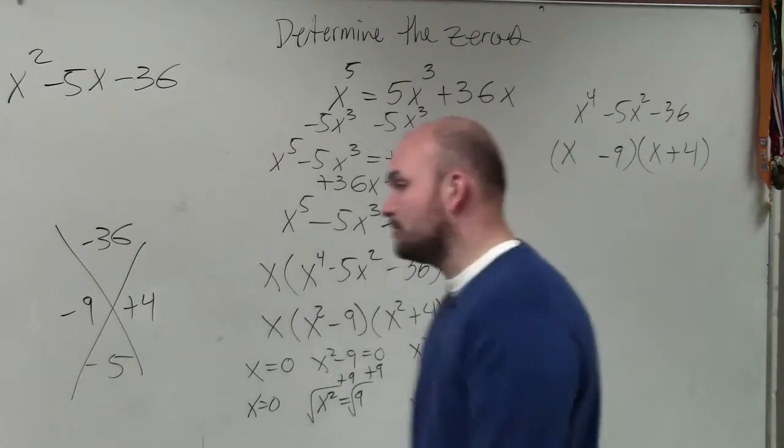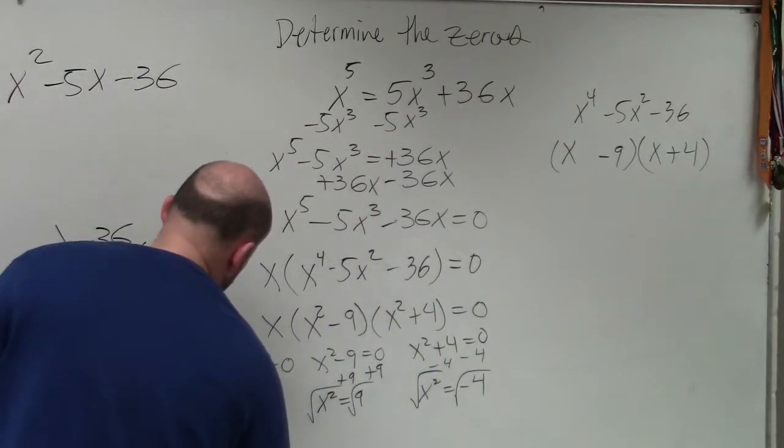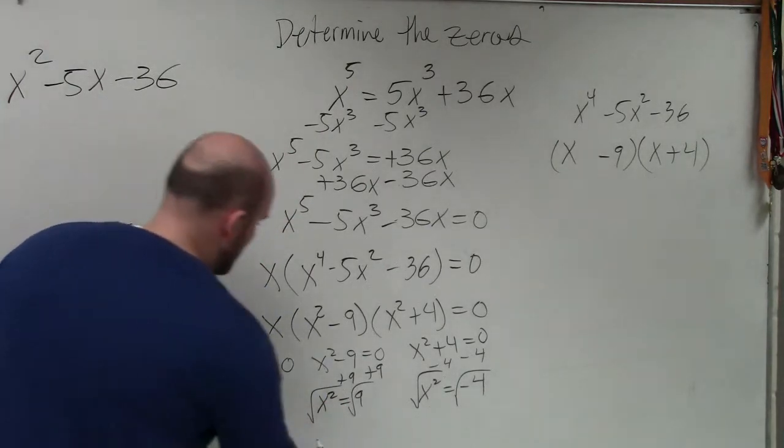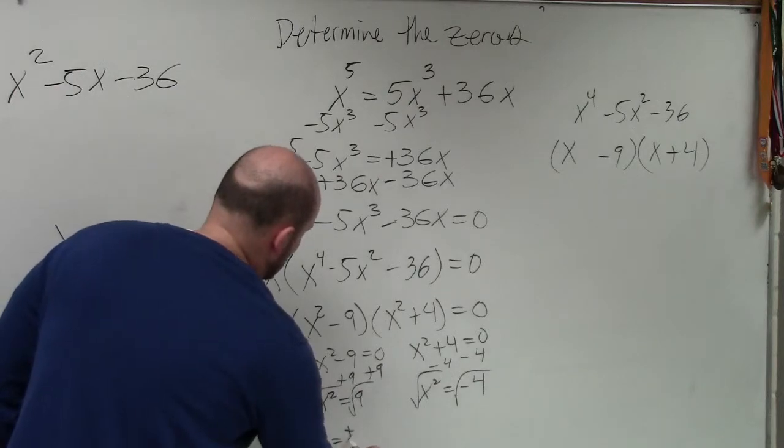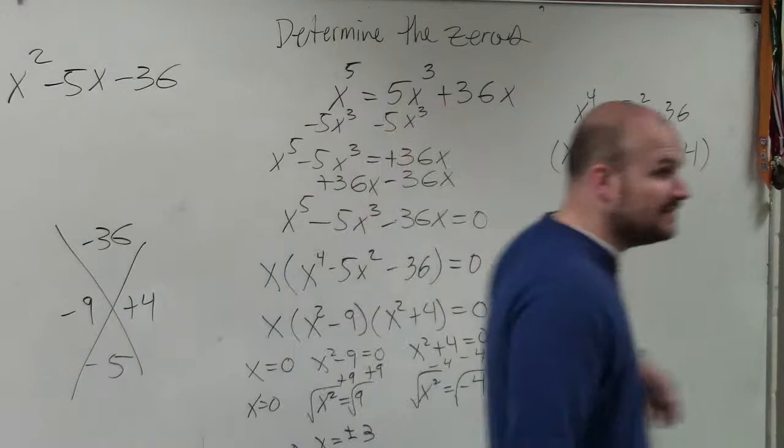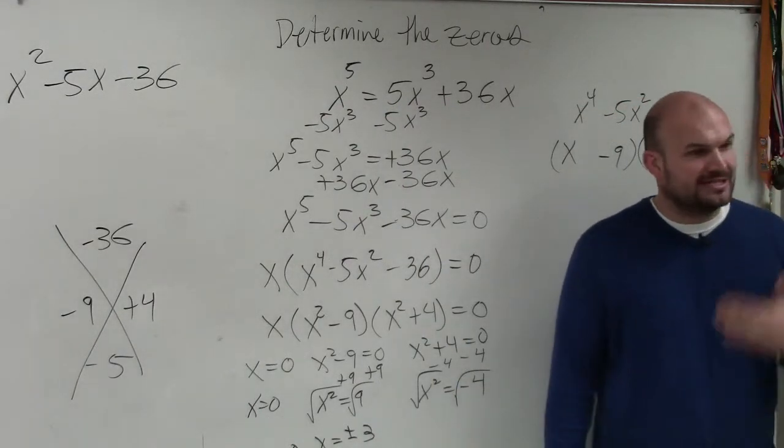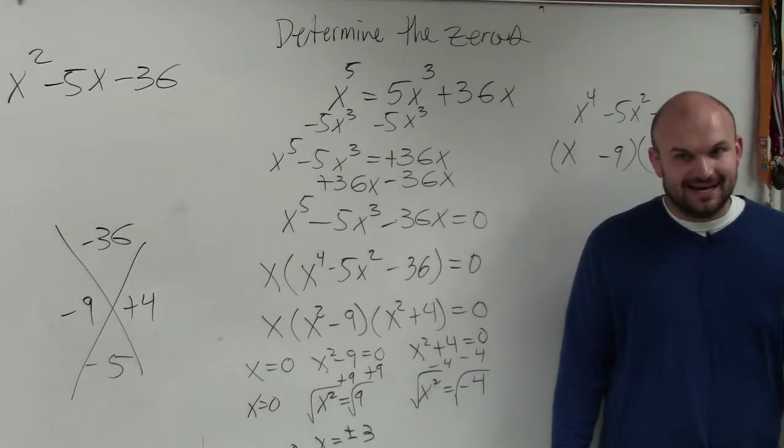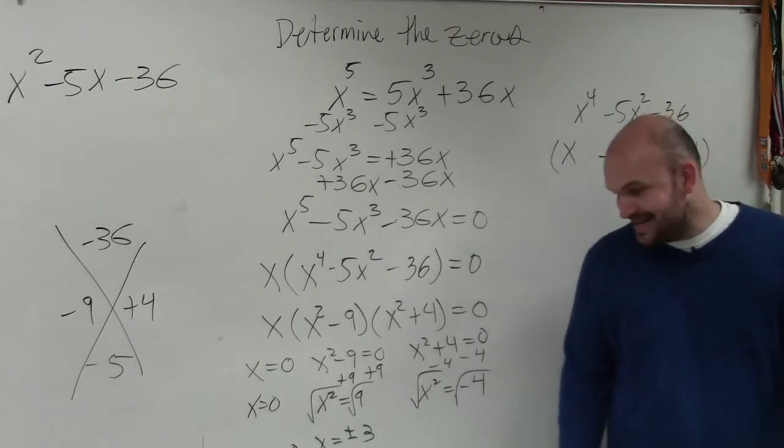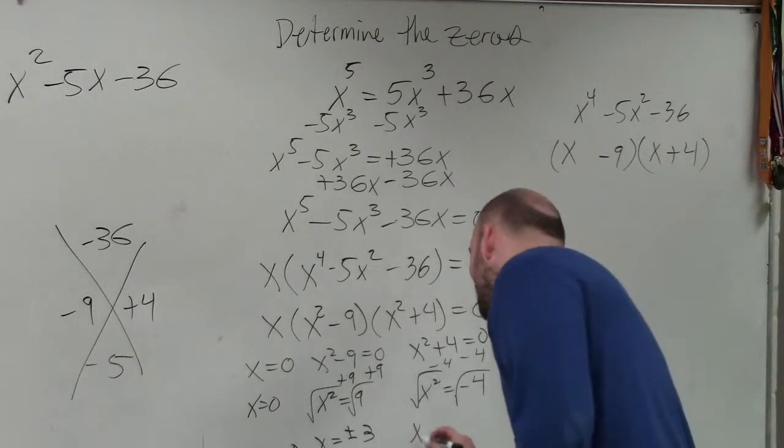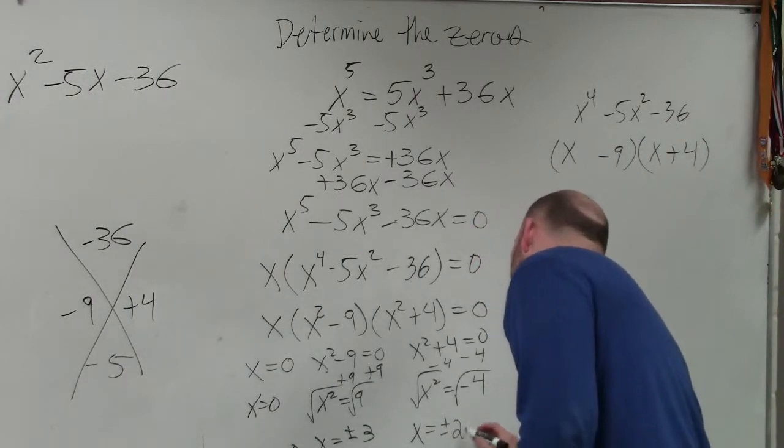Now, remember, ladies and gentlemen, when you take the square root, you need to do plus or minus. So the square root of 9 is plus or minus 3. And then we can take the square root of a negative number now, right? We just need to use the imaginary unit i. So the square root of negative 4 is going to be x equals plus or minus 2i.